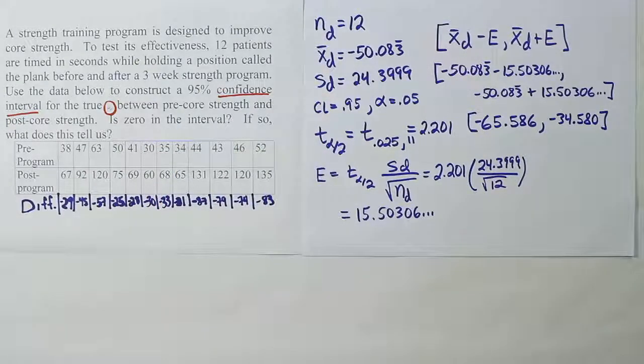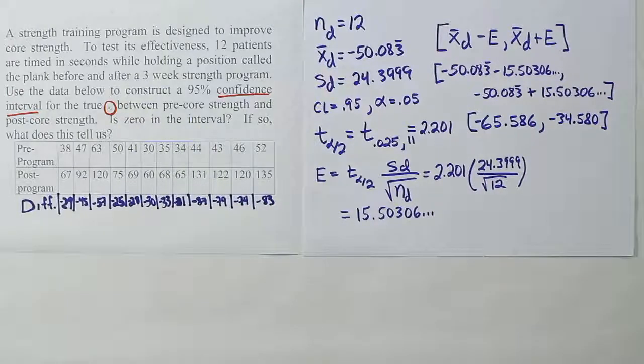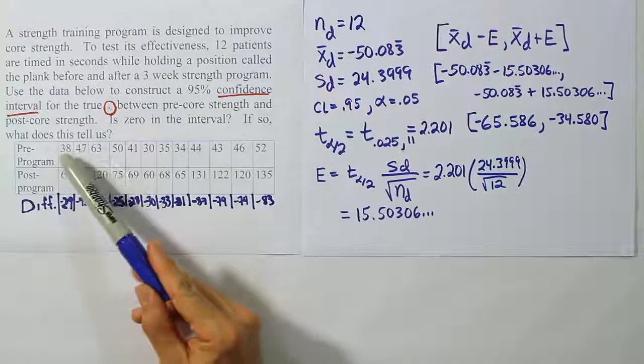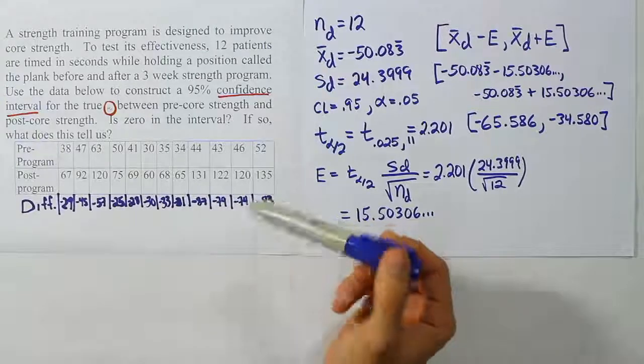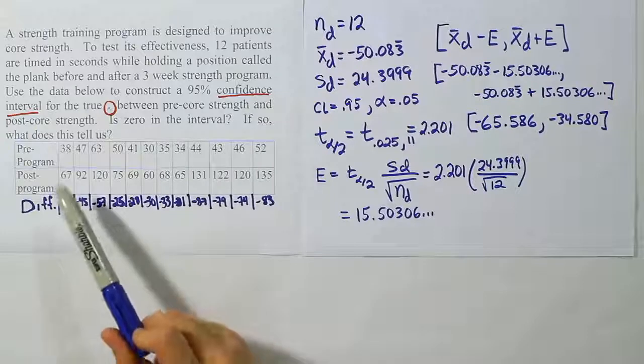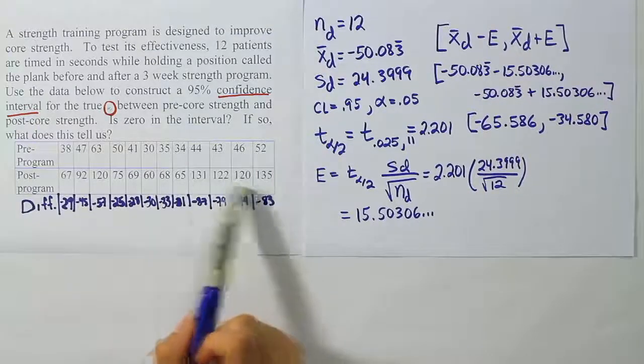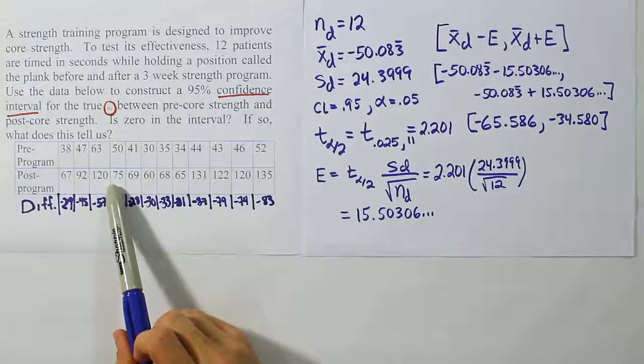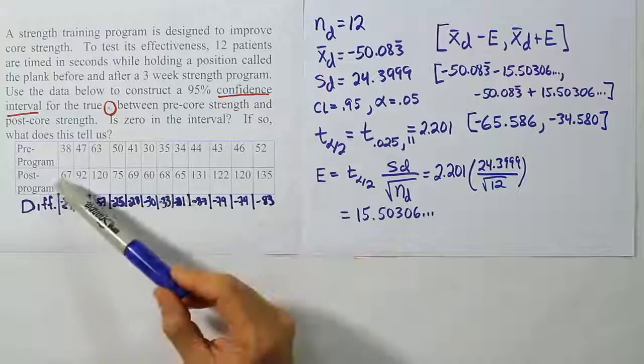Now that interval does not contain zero. The question they ask us is, does the interval contain zero? And the answer is no, it doesn't. And what does that tell us if it doesn't contain zero? Well, I did the subtraction pre-program minus post-program, and the result was negative here. In fact, it's negative for all the values at the bottom here, which means for every person in the program, their core strength must have increased because they can hold the plank longer after the program.